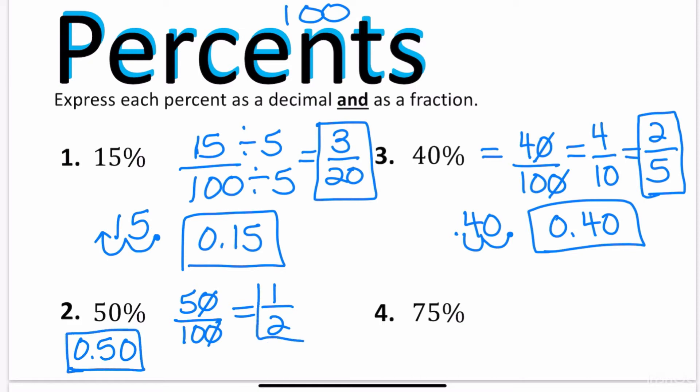And at number 4, 75% means 75 over 100. 75 cents is basically 3 quarters in the U.S. So we can divide by 25, and that's going to equal 3 fourths. So the simplified fraction is 3 fourths. That's 75%. As a decimal, this is going to be 0.75.